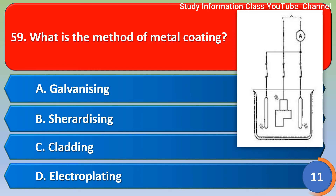Next question: What is the method of metal coating? Options include galvanizing, calorizing, cladding, and electroplating. The correct answer is Option D: electroplating.